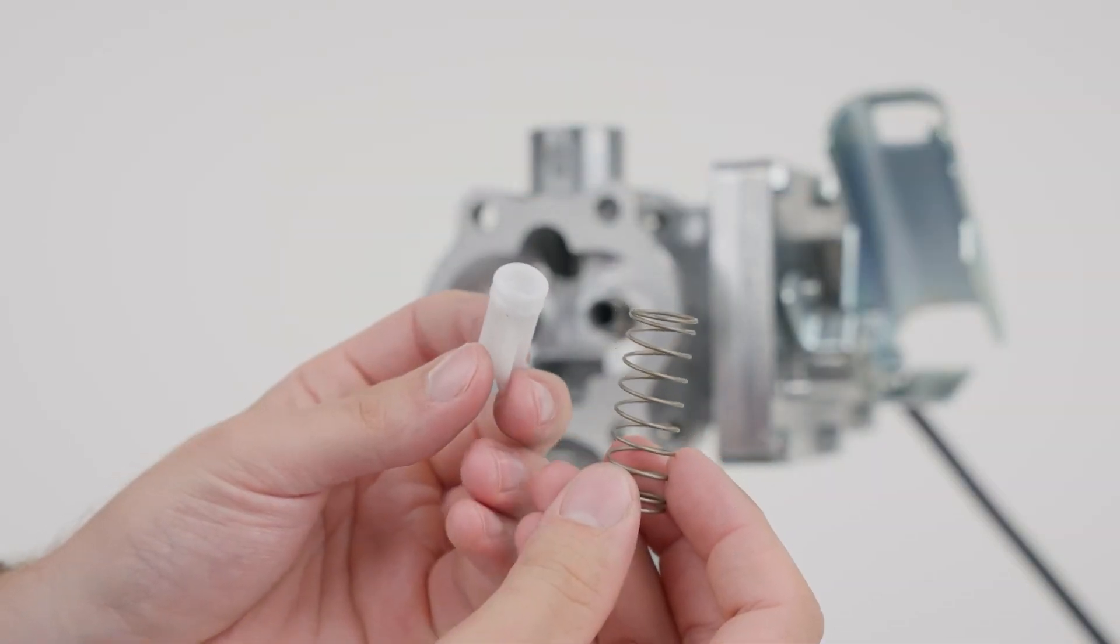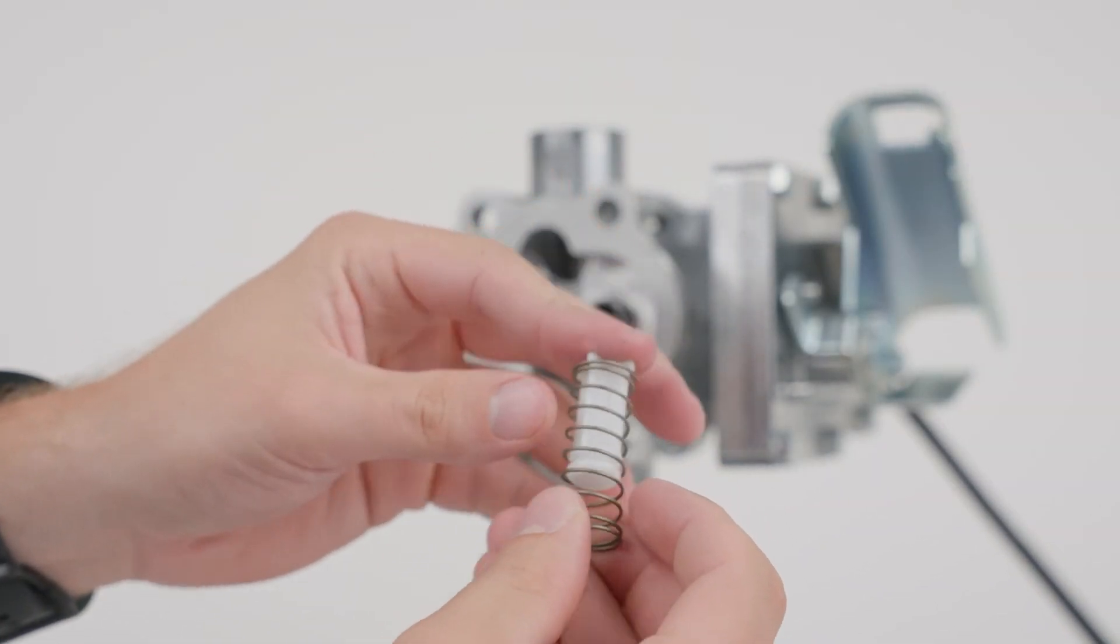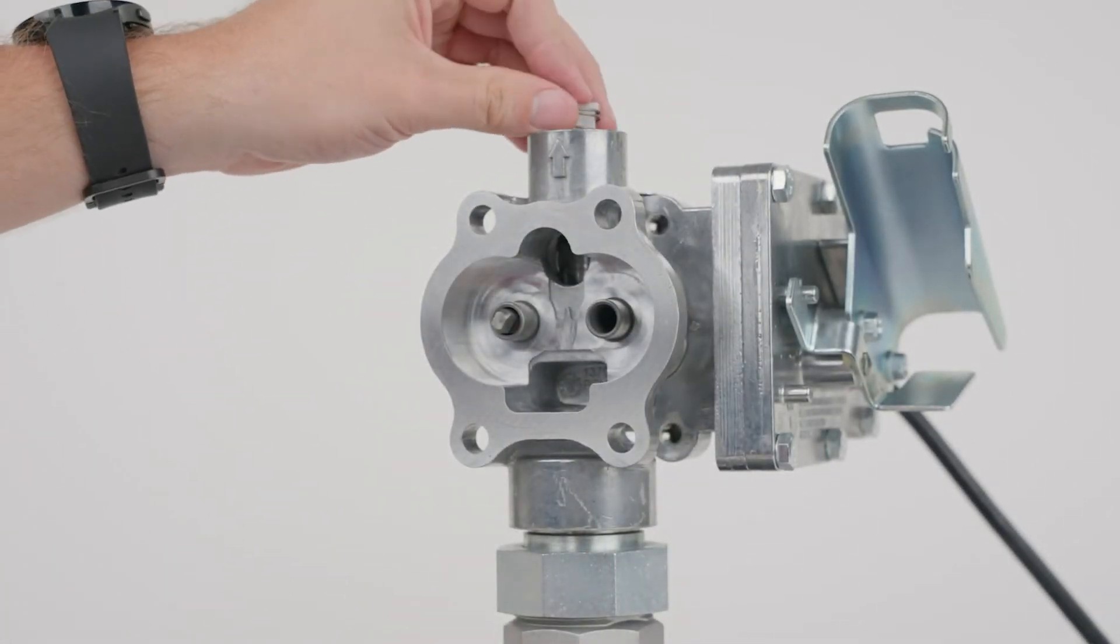To assemble, place the spring and poppet into the poppet cavity through the top outlet port.